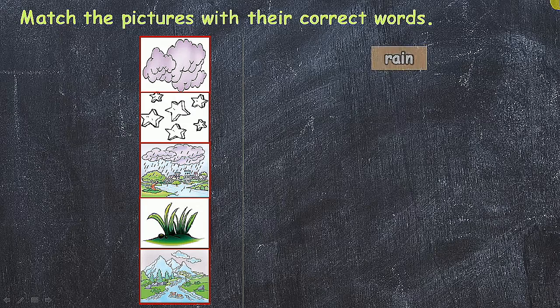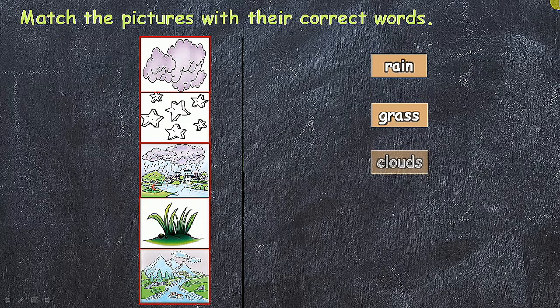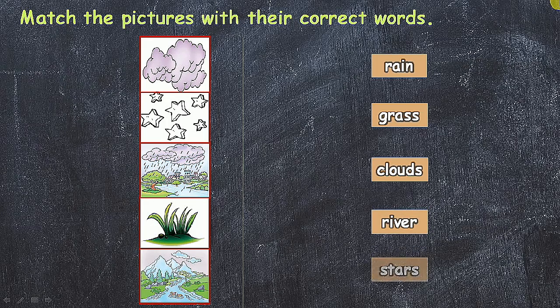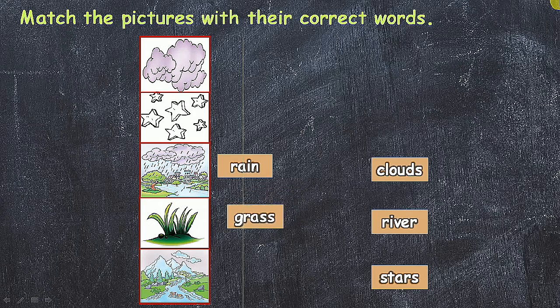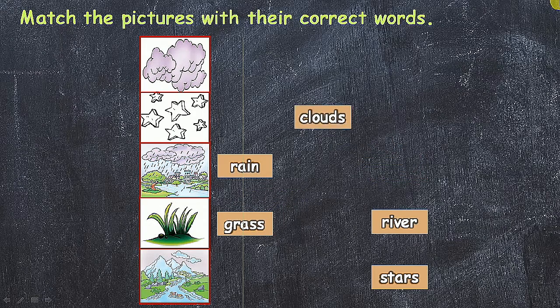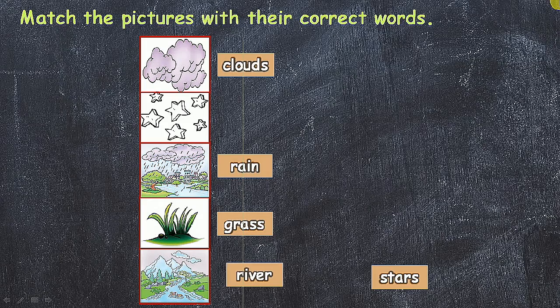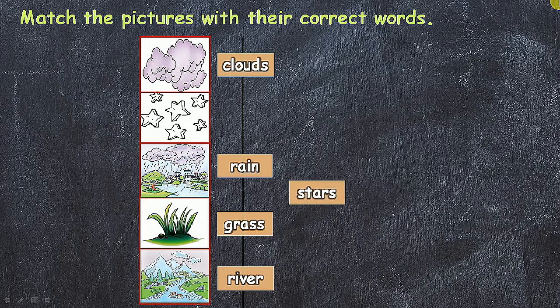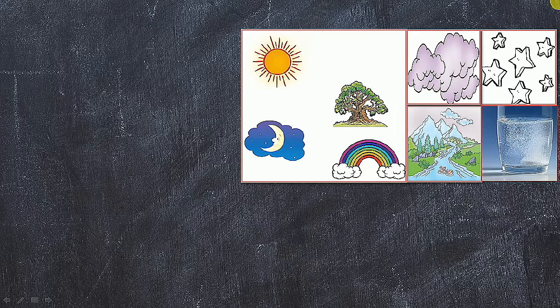To make this task easier, I have designed another teaching strategy: rain, grass, clouds, river, and then last one stars. Let us learn another activity.